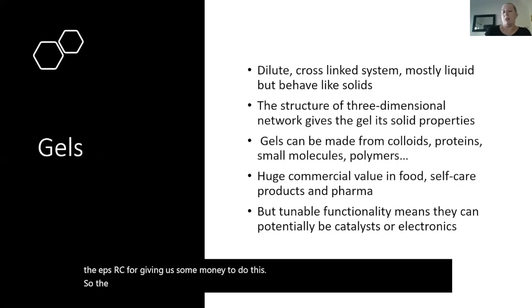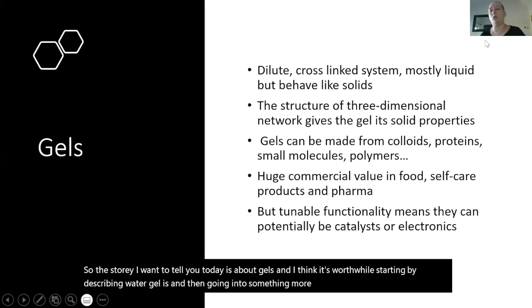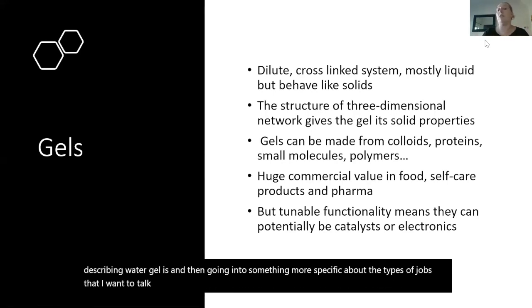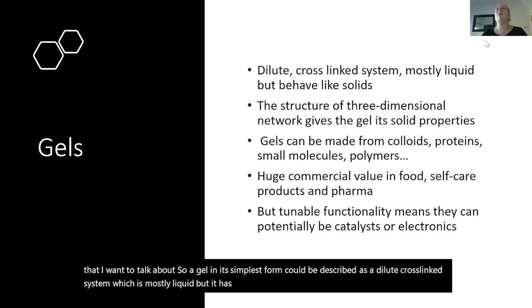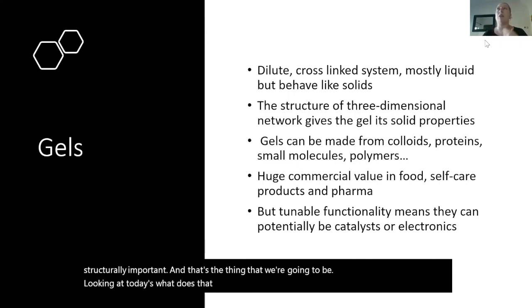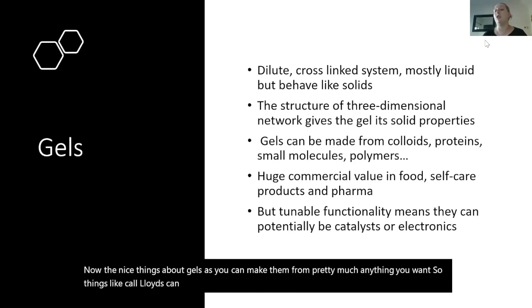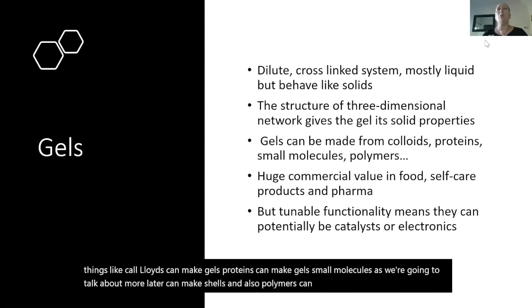The story I want to tell you today is about gels. It's worthwhile starting by describing what a gel is and then going into something more specific about the types of gels I want to talk about. A gel in its simplest form can be described as a dilute cross-linked system which is mostly liquid but has the behavior of a solid. It's this cross-linked network within the liquid that holds the liquid together to make the gel — that's really structurally important and that's what we're going to be looking at today: what does that network look like, and how does understanding the structure allow us to understand material design?